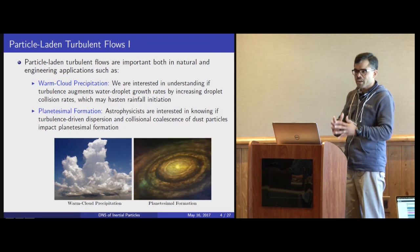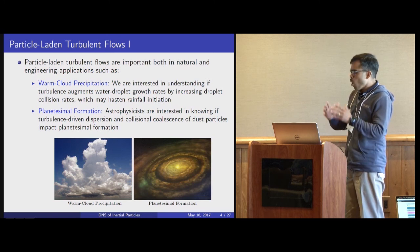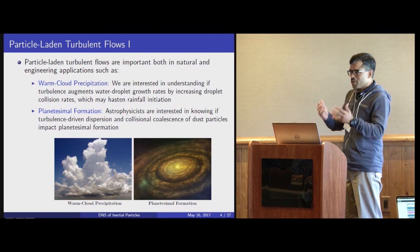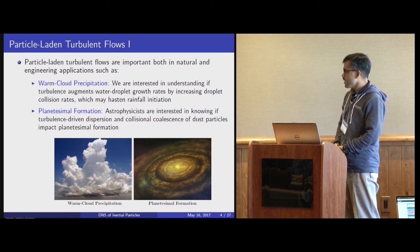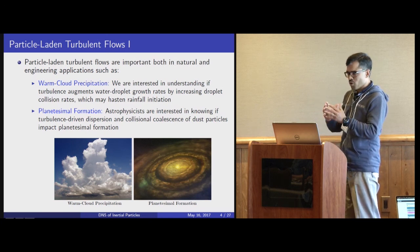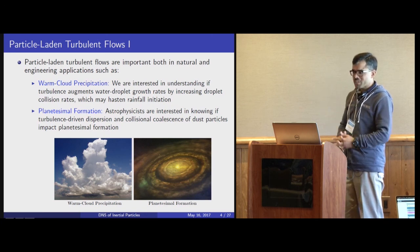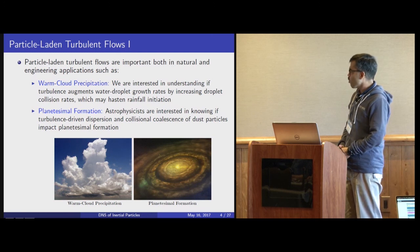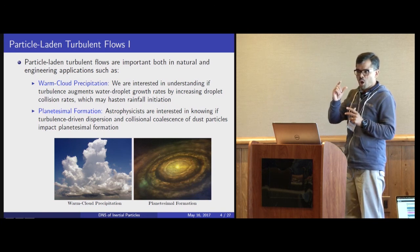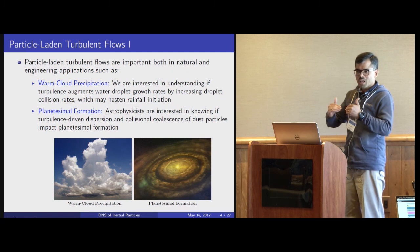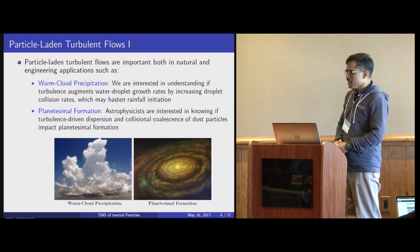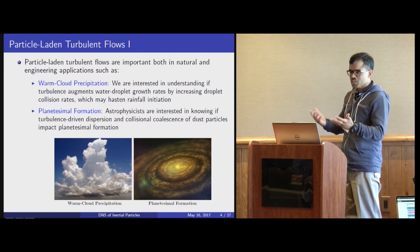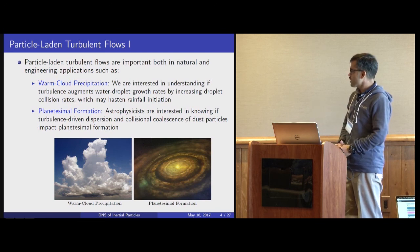Specifically we are interested in knowing if cloud turbulence increases the collision rates of water droplets, because increased collision rates of water droplets may lead to faster growth in the droplet size and thereby hasten rainfall formation. The other problem of interest is planetesimal formation. Planetesimals are small planet-like structures that are precursors to the final planets.